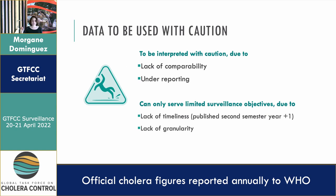It's not timely at all — it's published during the second semester of the following year. For example, 2021 data is currently being compiled and will be published later this year, probably around September. And since it's aggregated annually at national level, this cannot really help understand and document fine spatio-temporal dynamics.